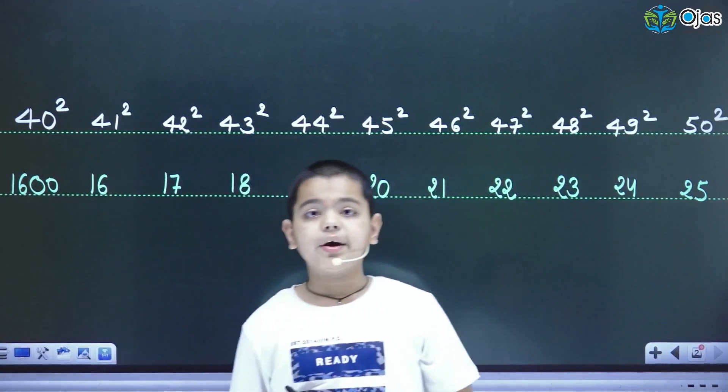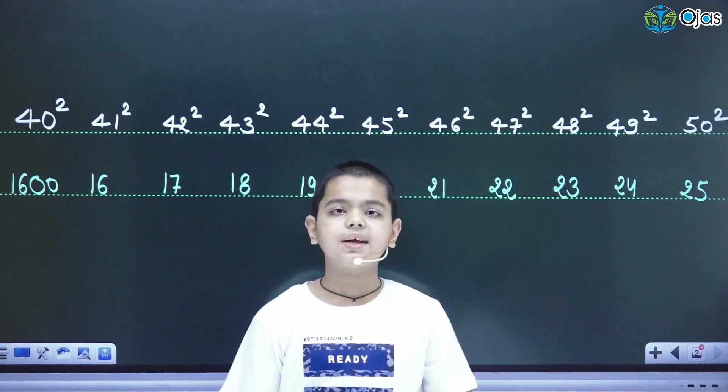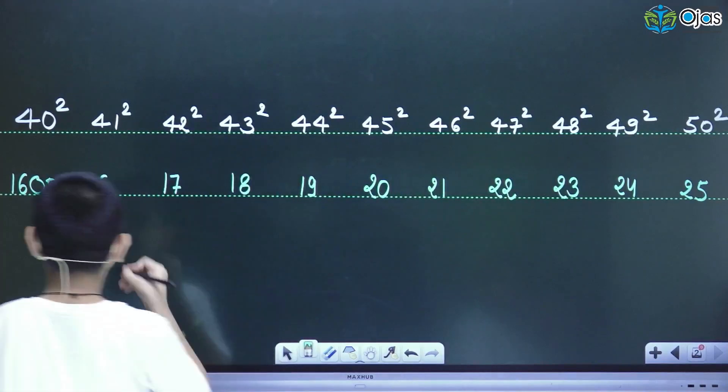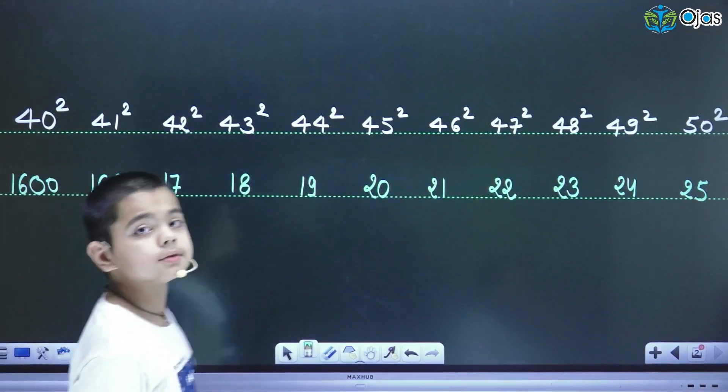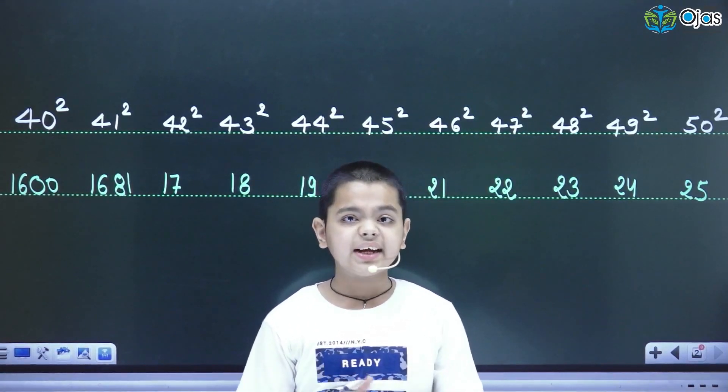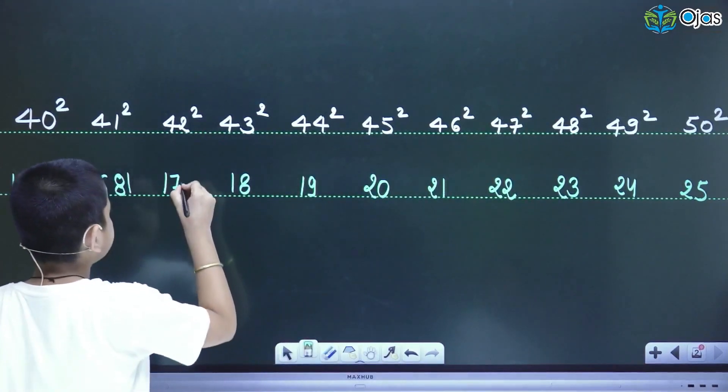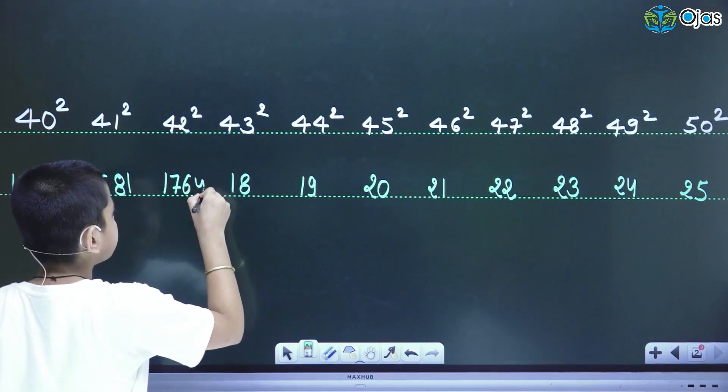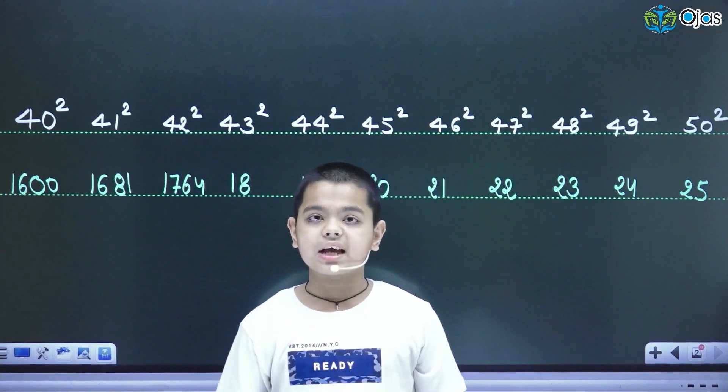For 1, the complement of 1 is 9 and the square of 9 is 81, so I will write here 81. For 2, the complement of 2 is 8 and the square of 8 is 64, so I will write here 64.